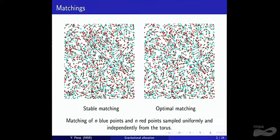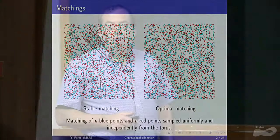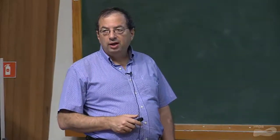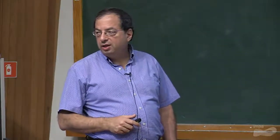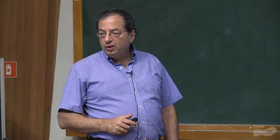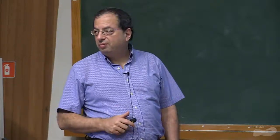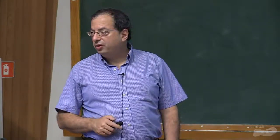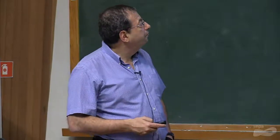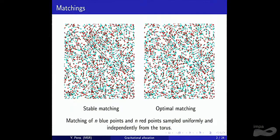Analyzing the average length in the greedy matching is another open problem I want to emphasize. The optimal matching can be obtained by the Hungarian method, which is O(n³) operations. We'd like to understand the performance of faster methods, and we'll see one today.